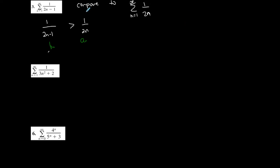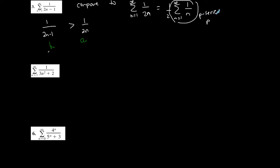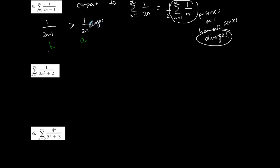Since a_n = 1/2n is my smaller series, I want to see if it diverges. I can factor out 1/2, giving (1/2) times the summation of 1/n. This is the harmonic series where p = 1, which diverges. So the smaller of the two diverges, which means the larger one also diverges. Using the direct comparison test, this series diverges.